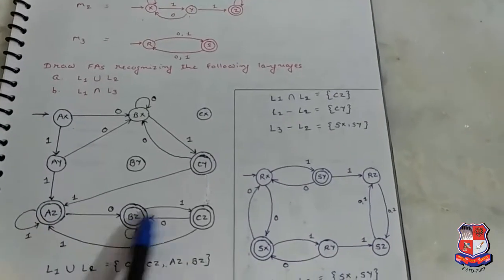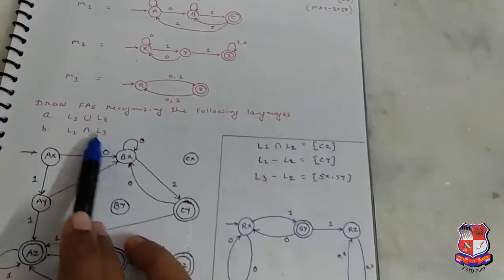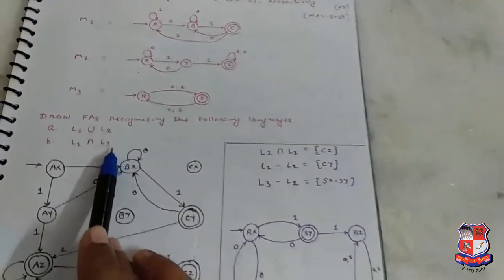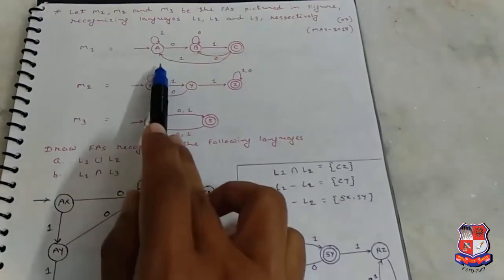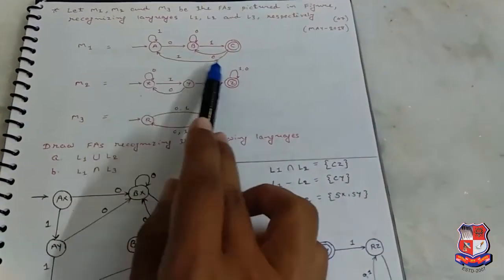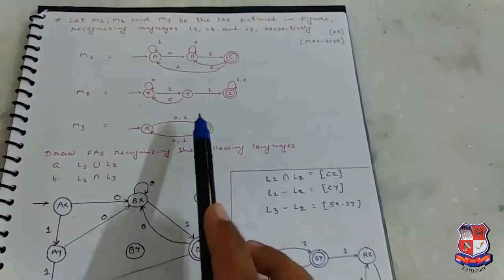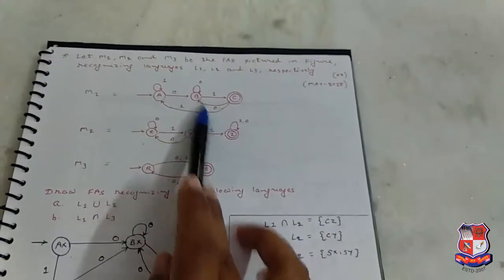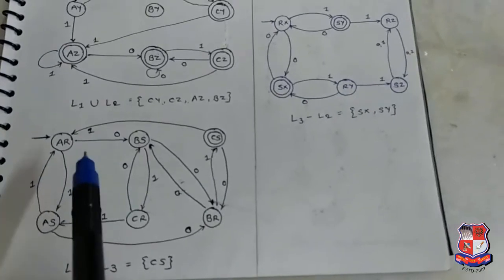Next, L1 intersect L3. So cross product of L1 and L3. Here in L1 there are three states. In L3 there are only two states.